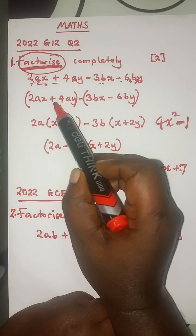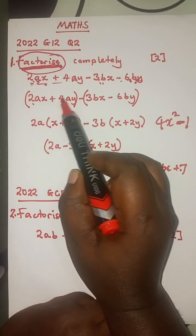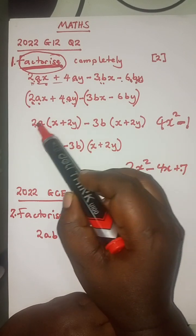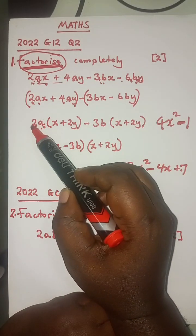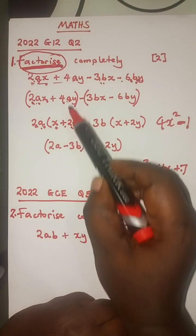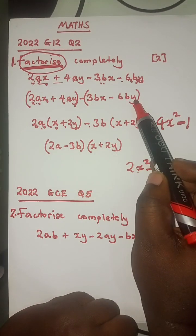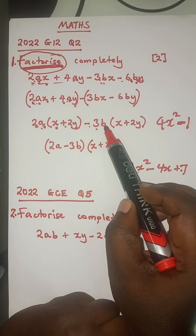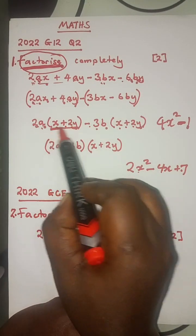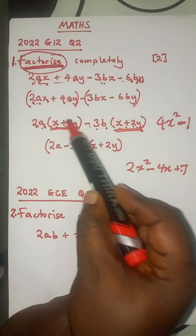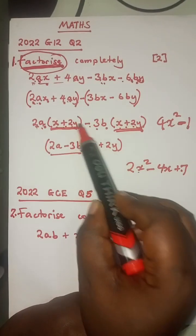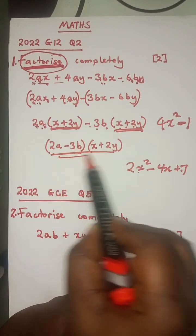After grouping them, you introduce common factorization. Look at what we have here — what is common? We have 2A, because 2 can go into 4 and we have A in both terms. So the common factor is 2A, leaving X plus 2Y. Then on the other side, what is common is 3B, leaving X plus 2Y. At this stage, whatever you have on this side should be the same on the other side. So you get what is outside: 2A minus 3B, and since the brackets are the same you just write one: X plus 2Y. Therefore, your final answer is (2A minus 3B)(X plus 2Y).